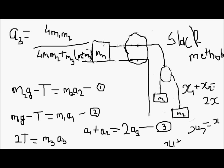First you have to find the acceleration relation between M1, M2 and M3. That will be our main aim — we have to find the acceleration relation between M1, M2 and M3.